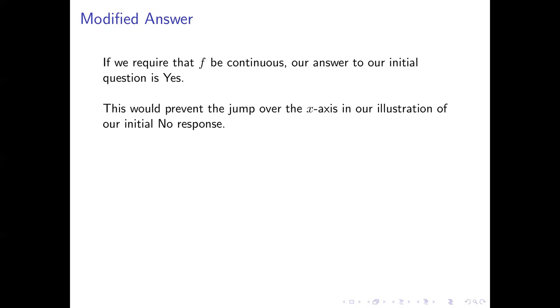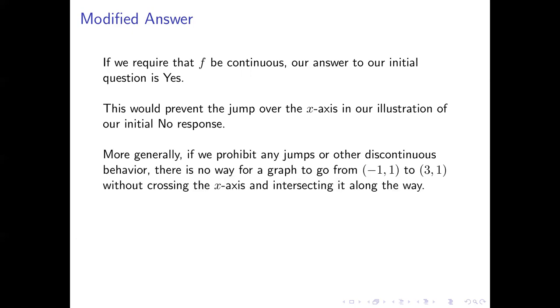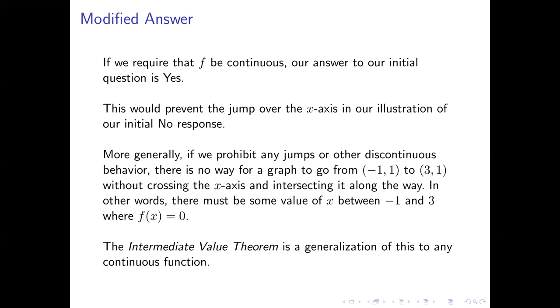So that extra continuity requirement prevents the jump discontinuity that we saw. More generally, if we prevent any kind of discontinuous behavior here in the graph of our function, then there's no way for the function to go from the point (-1, 1) to the point (3, 1) without going through the x-axis along the way. Another way to put that is there must be some value of x between -1 and 3 where the function value is equal to 0. The intermediate value theorem basically says that continuous functions are always like this.